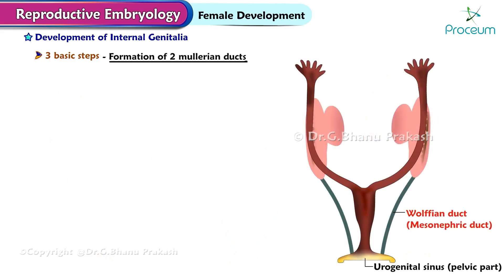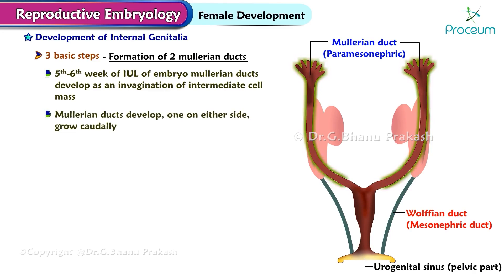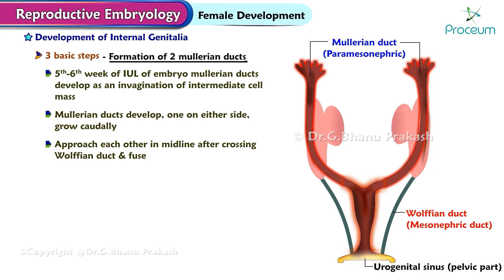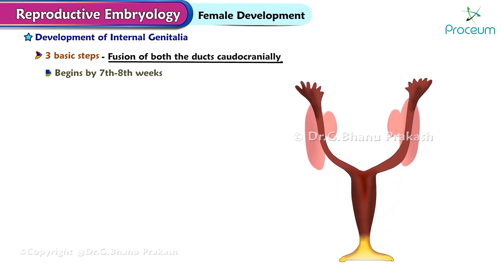Formation of two Müllerian ducts: in the fifth to sixth week of intrauterine life, Müllerian ducts develop as an invagination of the intermediate cell mass. Two Müllerian ducts develop, one on either side, and grow caudally. They approach each other in the midline after crossing the Wolffian duct and fuse.